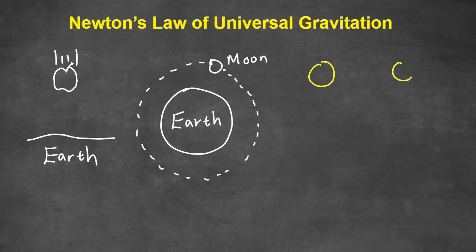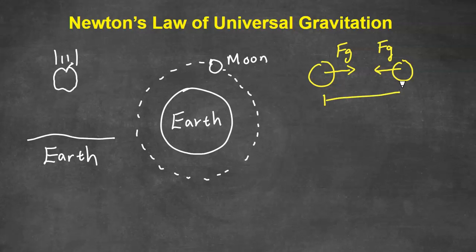The law of universal gravitation states that there is a force between any two objects, big or small, called the gravitational force. It comes in pairs, and notice the two forces are in equal and opposite directions — reminiscent of Newton's third law. The distance between the masses, as well as the mass of each object, affects how much force there is.